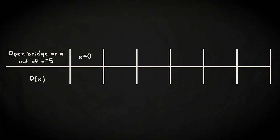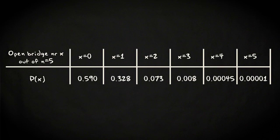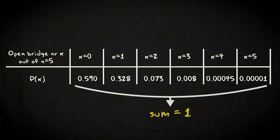By filling in values 0, 1, 2, up to 5 for x, you get the following probabilities. And if you sum the 6 probability values, you find that equals 1, which had to be the case, because the outcomes from x equals 0 to 5 form the set with all possible outcomes for this random variable.